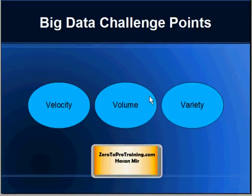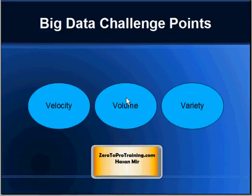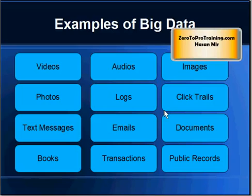For example, 2.5 petabytes is created by Walmart transactions in just one hour. Variety is yet another challenge because this data, although it's coming in at very high speed and creating large files, is not organized like relational databases that store data in tables. This data is in all sorts of formats — some are files, some are videos, some are audios. Even within files, there are a variety of formats with no standard structure. Examples of Big Data include videos, audios, images, photos, log files, click trails, text messages, emails, documents, books, transactions, and public records.